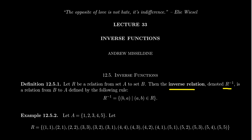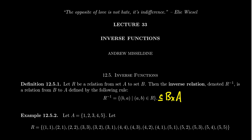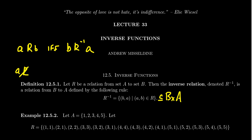R inverse is a relation from B to A. Notice how this direction gets switched around — R is a relation from A to B, but R inverse is a relation from B to A. You're switching the roles of the first set and the second set. R inverse is a subset of B cross A, and it's a collection of ordered pairs (b, a) such that (a, b) was an element of the original relation R. Given any ordered pair (a, b), the inverse relation switches the order. A is related to B if and only if B is related to A with regard to the inverse relation.